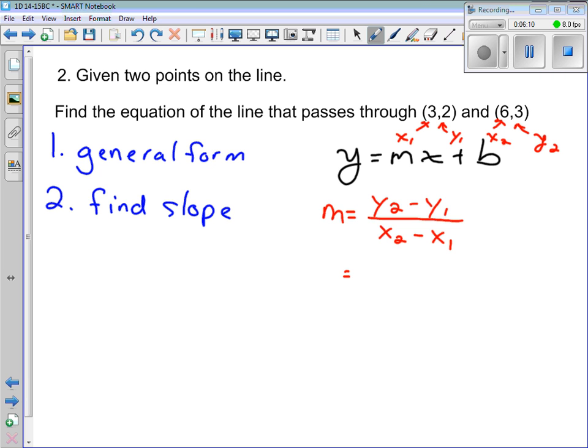So, our slope is going to be, let's see, our y2 value is 3. So we're going to have 3 minus 2 on top. x2 is 6. So we're going to have 6 minus 3 on the bottom. 3 minus 2 is 1. 6 minus 3 is 3. So our slope is going to be 1 third. Makes sense. Okay? So, we've found our slope. And I'll say, and sub in.